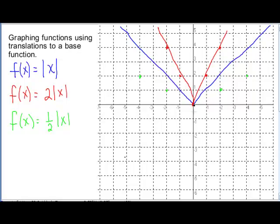And our resulting graph in green would be this. So again, numbers bigger than 1 make the graph skinnier, and numbers that are fractions make it wider.